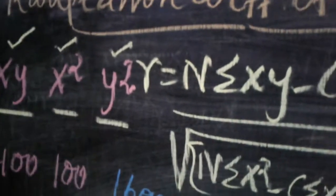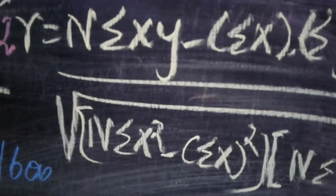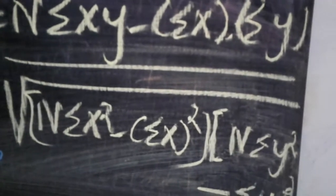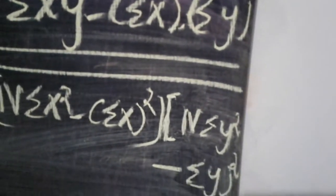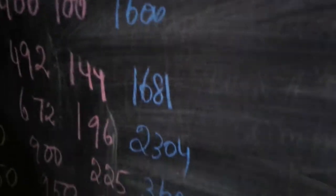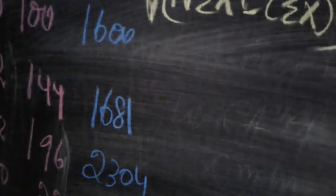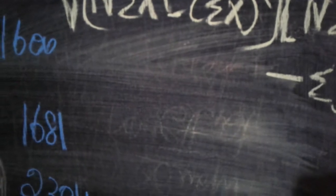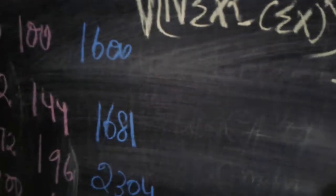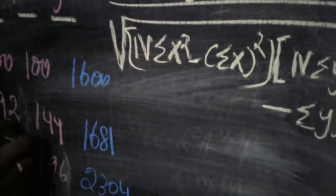Continuing y²: 60×60 = 3600, 50×50 = 2500. We have now calculated xy, x², and y² for all values. We need the column totals: Σx, Σy, Σxy, Σx², and Σy². Σx = 10+12+14+15+19 = 70. Σy = 40+41+48+60+50 = 239.